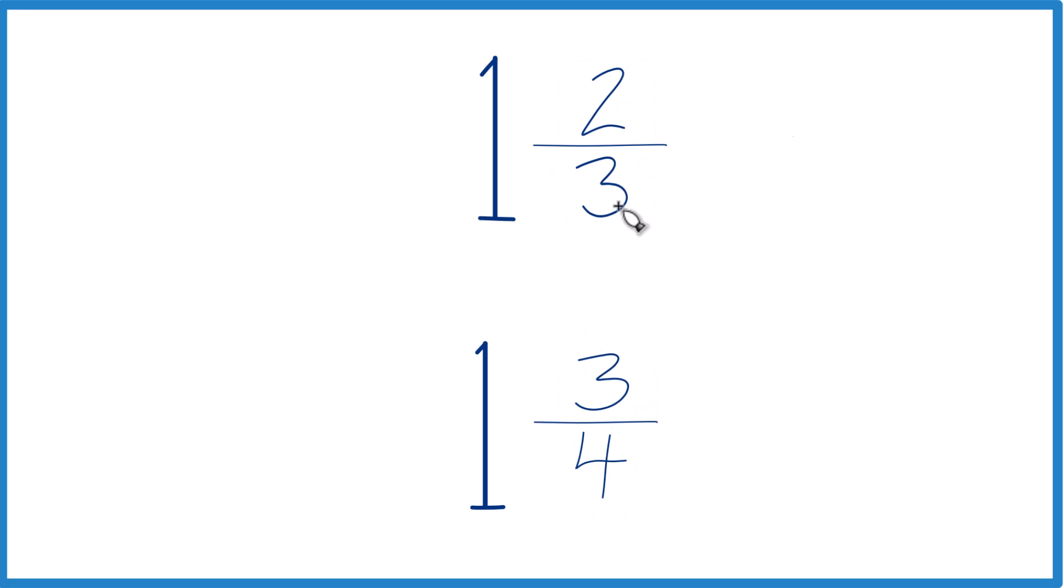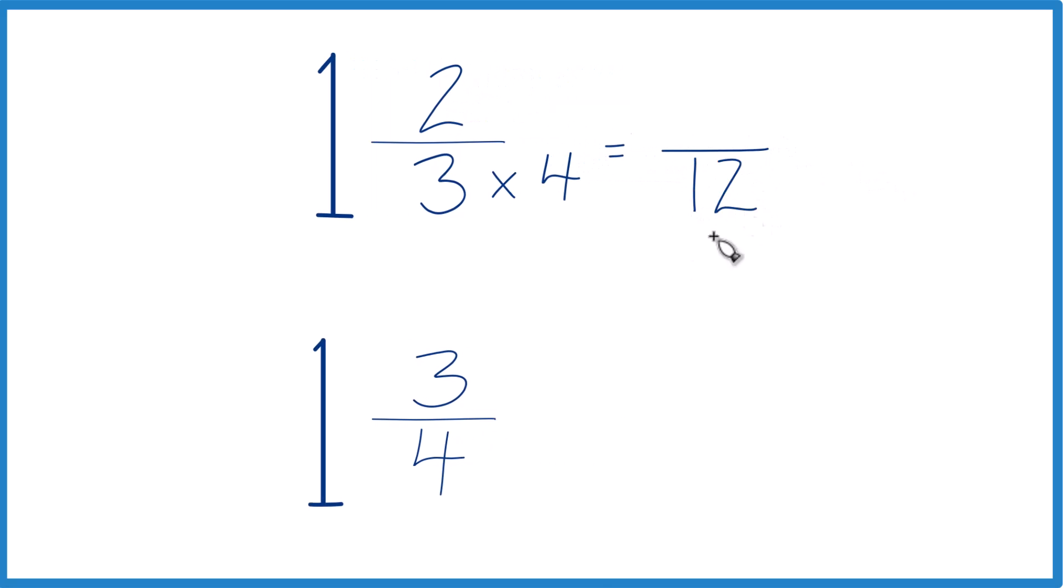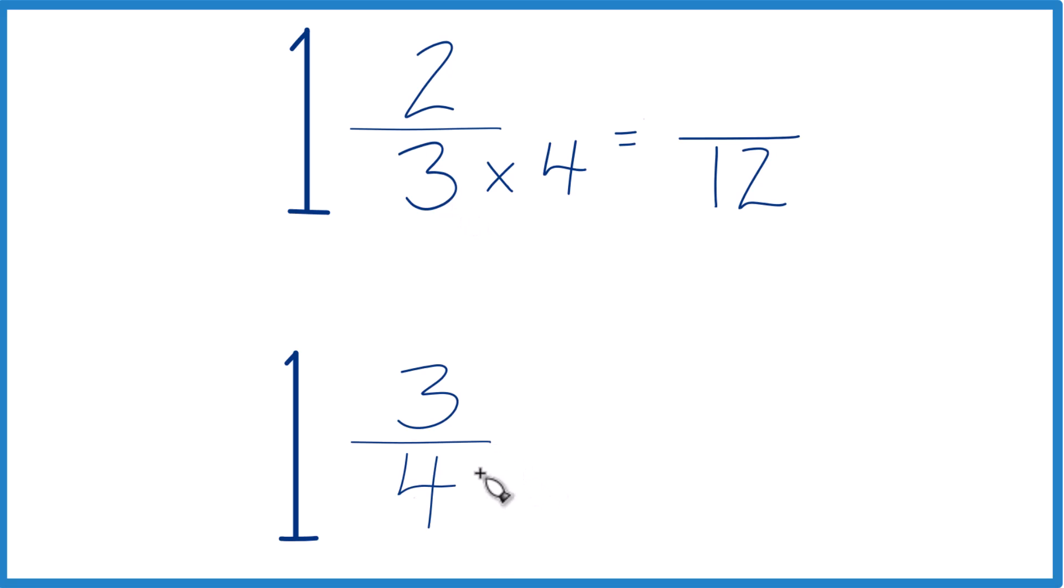So why don't we take 3 times 4, that equals 12. And then down here we could say 4 times 3, that also equals 12. Now we have the same denominator.